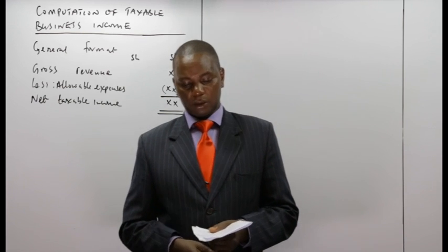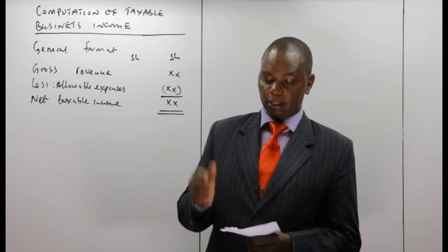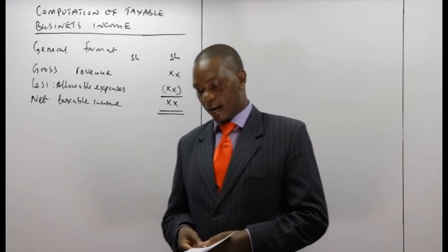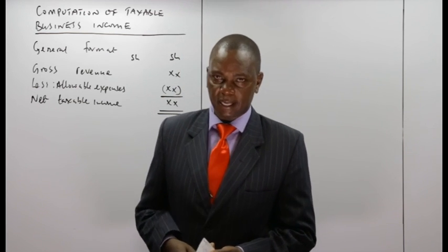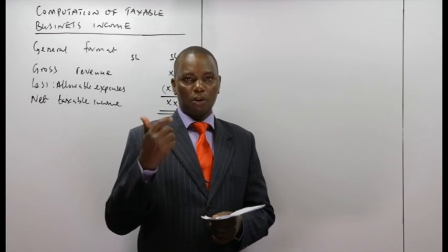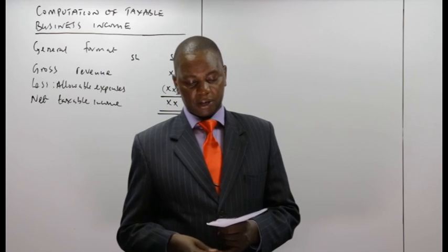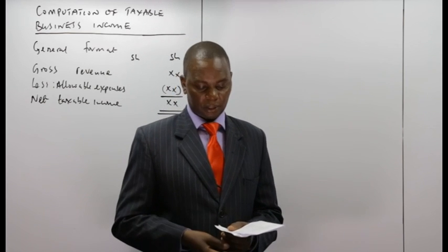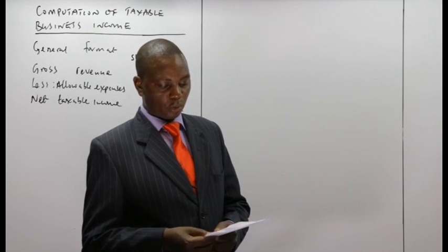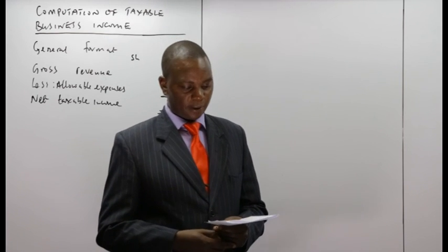Number twelve is contributions to scientific research organizations or an educational institution approved by the Commissioner of Domestic Taxes. These contributions are allowable with the objective of encouraging the promotion of research and assisting educational institutions in carrying out research.